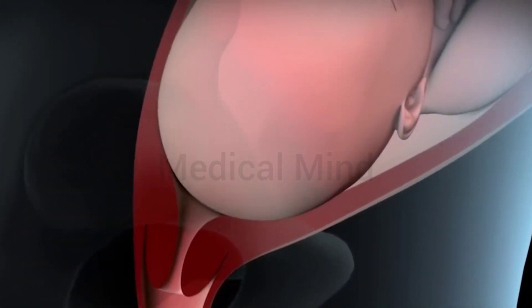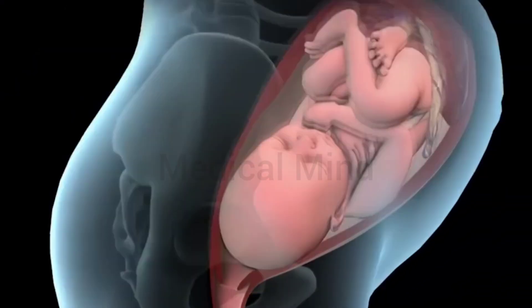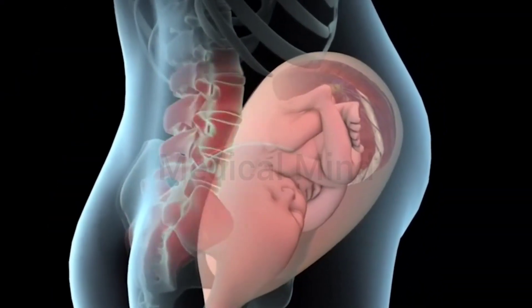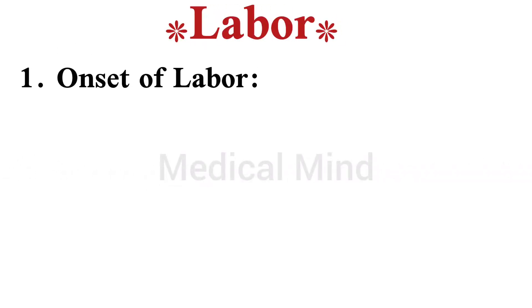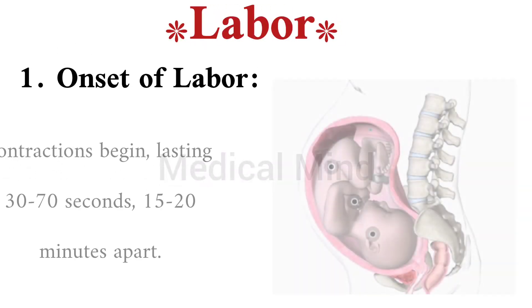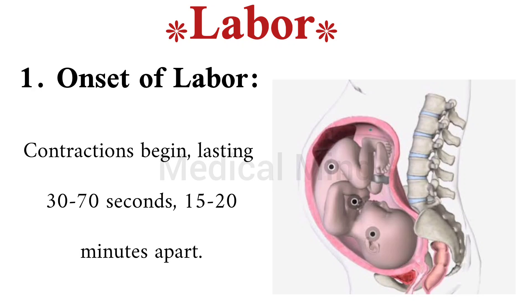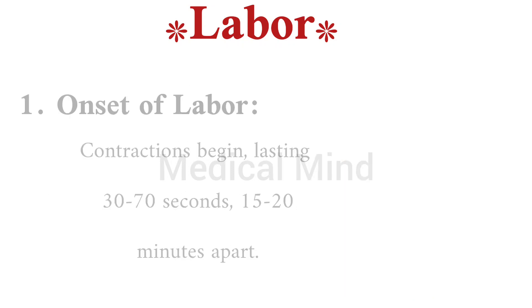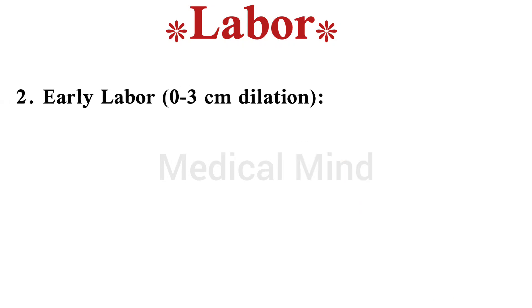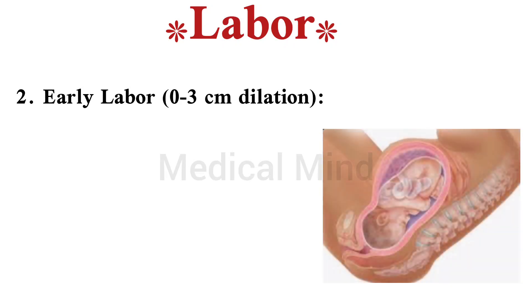Childbirth, also known as labor and delivery, is a complex process. Here's a step-by-step demonstration. Labor: one, onset of labor — contractions begin, lasting 30 to 70 seconds, 15 to 20 minutes apart. Two, early labor: zero to three centimeters dilation.